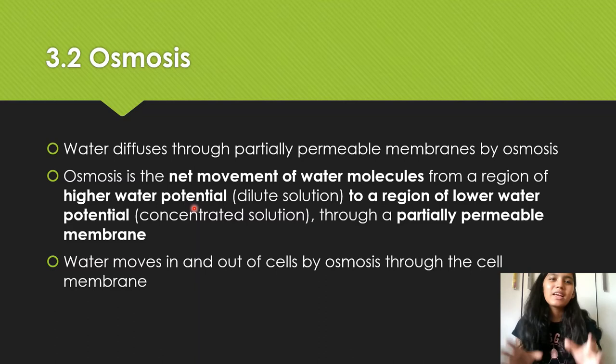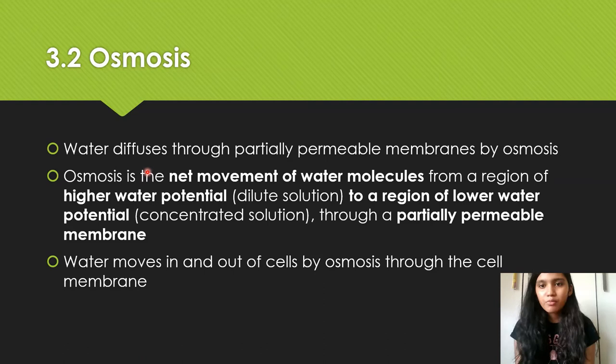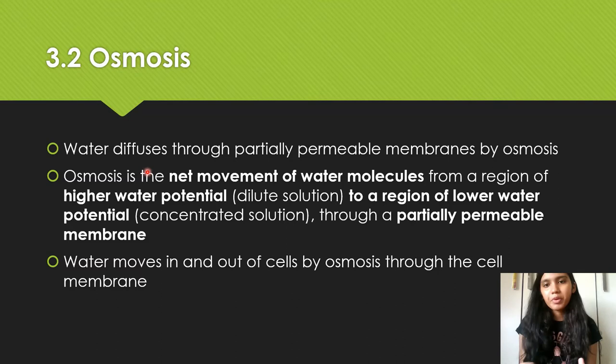Through a partially permeable membrane is your third mark. Water diffuses through the partially permeable membrane by osmosis. In an MCQ, they once asked whether diffusion is involved in osmosis — yes, it is, because water virtually diffuses through the partially permeable membrane from its higher water potential to its lower water potential.